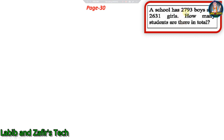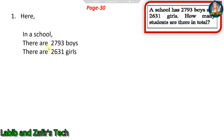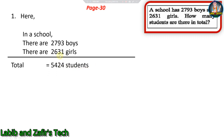Our first word problem is from page 30: A school has two thousand seven hundred ninety-three boys and two thousand six hundred thirty-one girls. How many students are there in total? We can see there are many boys and many girls, so we have to find how many students in total. We need to add these two numbers.